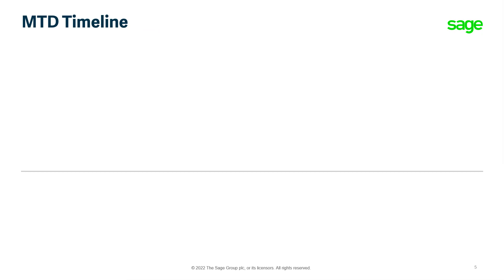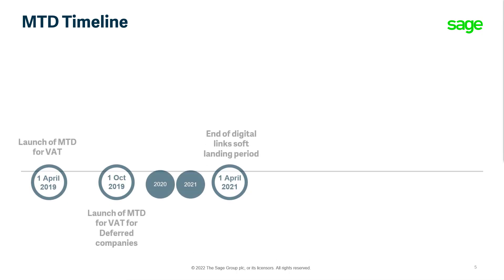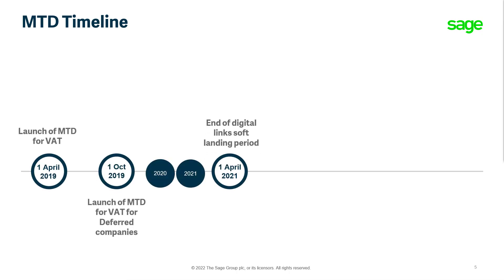Let's take a look at the Making Tax Digital timeline. Making Tax Digital for VAT is part of a larger Making Tax Digital rollout, and will eventually impact self-assessment and corporation tax submissions. This legislation initially came into effect in April 2019 for the majority of businesses, and the VAT return for the first VAT period after that date had to be submitted via digitally compliant software. More complex businesses, such as groups, were offered a deferral, and this applied to them from the 1st of October 2019.